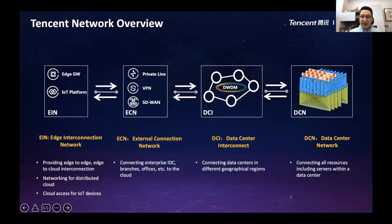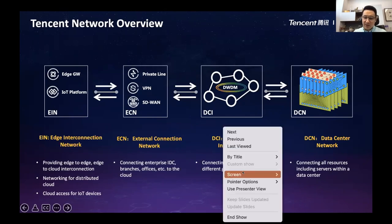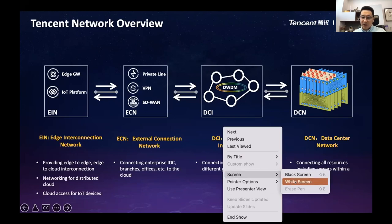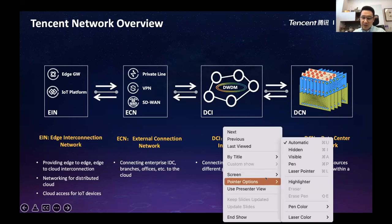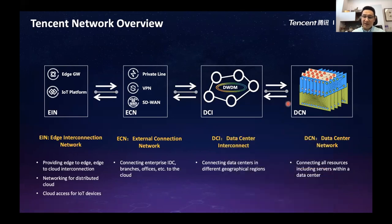Today I would like to talk about the network infrastructure for Tencent, especially for edge computing and distributed cloud. In this picture you can see, from right to left, a very high-level network architecture for Tencent. We have four different network levels: DCN, DCI, ECN, and EIN.